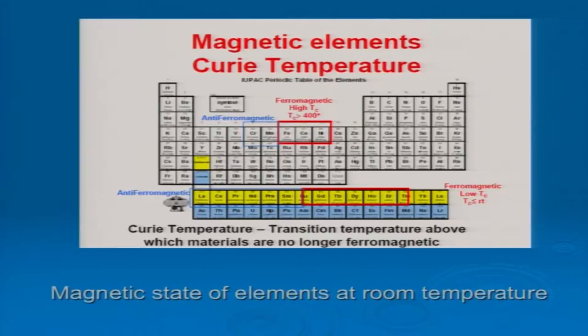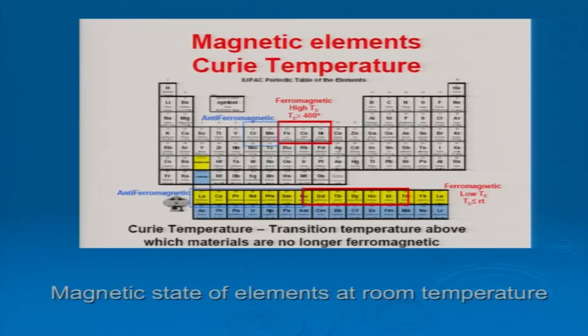Only three elements — iron, cobalt, and nickel — have Curie temperatures above room temperature; they are ferromagnetic at room temperature. All other elements are either diamagnetic or have Curie temperatures much lower than room temperature. Still, with essentially these three elements, most of the applications we use every day contain magnetic elements.